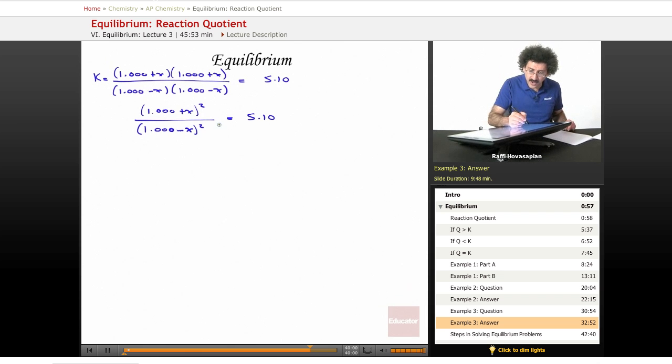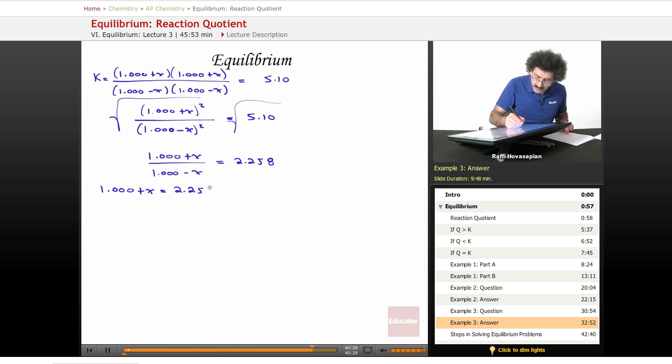And now we just, well, we have a square here and a square here, so we'll just go ahead and take the square root of both sides, and we end up with 1 plus X over 1 minus X equals 2.258, and then we multiply through to get 1.000 plus X equals 2.258 minus 2.258 times X. So we end up with 3.258 X equals 1.258, and X is equal to 0.386 molar. So we found X. X is 0.386 molar.